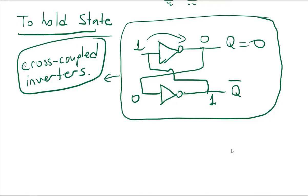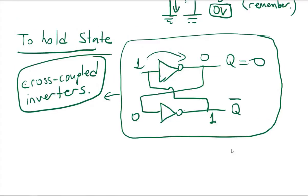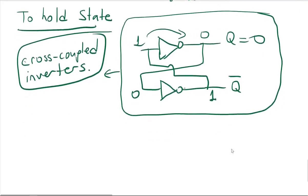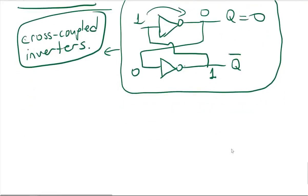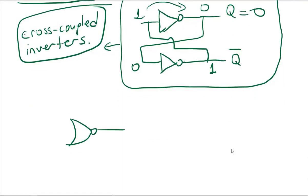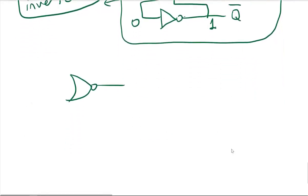Previously, we have seen how to use cross-coupled inverters as a memory to hold our state continuously. However, the problem with this circuit is that it does not have any inputs, so we cannot change our states. To give an input to this simple memory unit, I can have a NOR gate. I will use this cross-coupled idea, but to give an input, I will be using a two-input NOR gate.